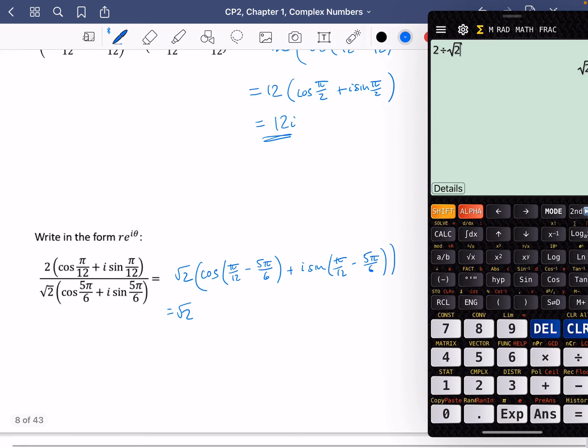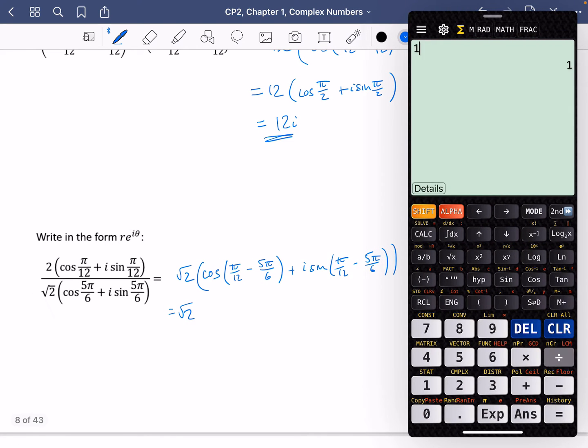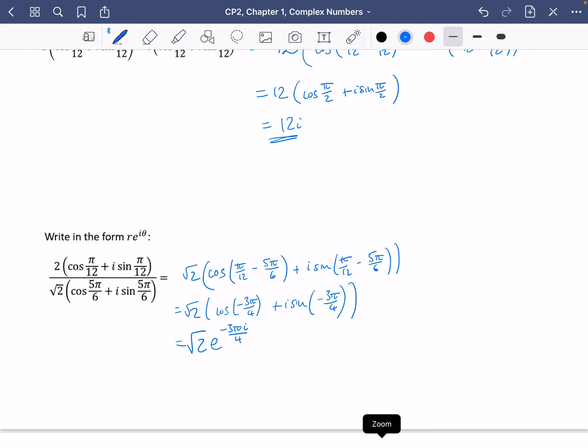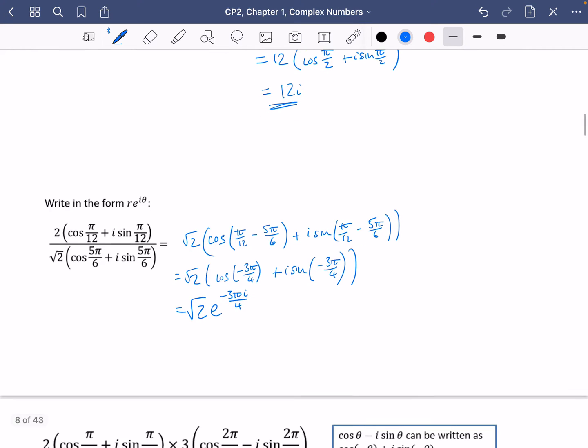So we have root 2. Now, I'm not going to do pi over 12. I'm just going to do 1 over 12 minus 5 over 6, which is minus 3 over 4. So that's the cos of minus 3 pi over 4 plus i sine of minus 3 pi over 4. And to finish that off and get it into the exponential form, it is going to be root 2 e to the minus 3 pi i over 4. It just kind of collapses down where you have the value of the modulus and then of the argument.